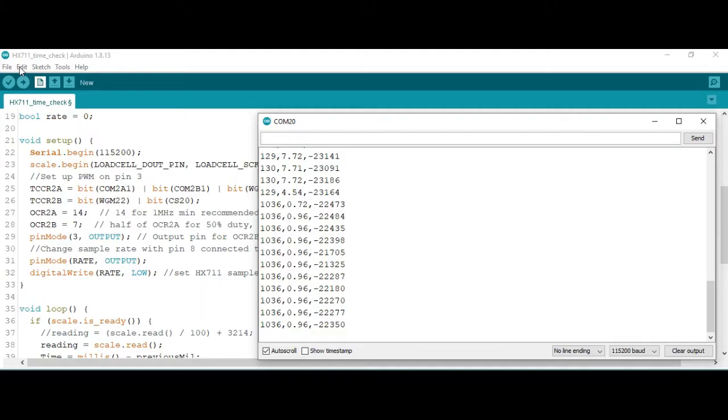And a couple of examples with PWM. This is around 1 megahertz, so you see we're getting about 0.96 samples per second, and up the rate we should be getting around about 7.7, around 130 milliseconds between samples.